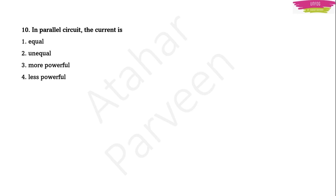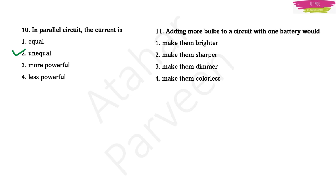Practice questions: In a parallel circuit, the current is unequal across branches. Adding more bulbs to a circuit with one battery makes them slightly less bright — the brightness decreases because the resistance increases and current through each bulb decreases. In a series circuit, if one bulb goes out, all others turn off because the single current path is broken. In a series circuit, the parameter that remains constant across all elements is current.